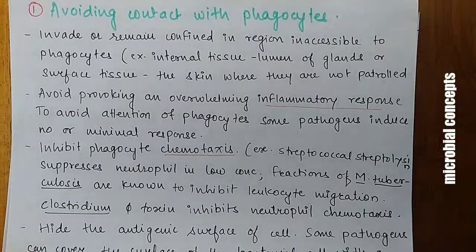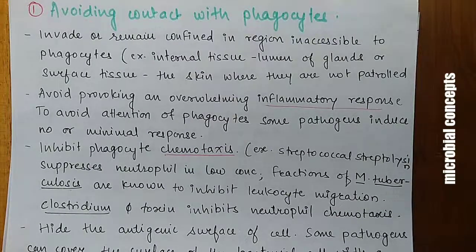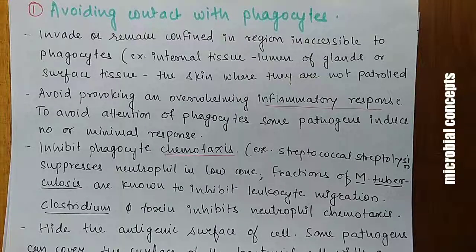Bacteria will remain confined in areas where phagocytes are inaccessible — for example, internal tissues such as the lumen of glands, or surface tissues such as skin. They also avoid provoking an overwhelming inflammatory response. When tissue is injured by bacteria, chemicals are released that cause blood vessels to leak fluid into the tissue, resulting in swelling.